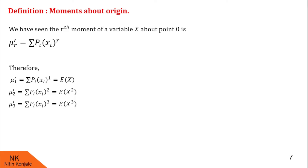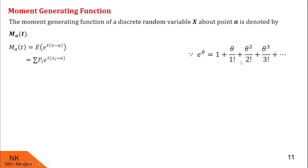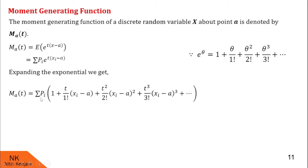Now let us proceed for the moment generating function. The moment generating function of a discrete random variable x about point A is denoted by M(A,t) and is defined as E(e^(t(x−a))), which equals summation pi times e^(t(xi−a)). We know the expansion of e^θ is 1 plus θ/1! plus θ²/2! plus θ³/3! and so on. So the expansion of e^(t(xi−a)) is 1 plus t(xi−a)/1! plus t²(xi−a)²/2! plus t³(xi−a)³/3! and so on.